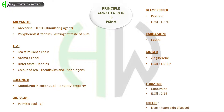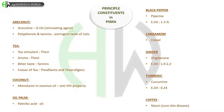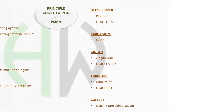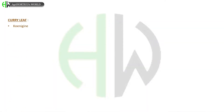In ginger, zingiberene is present and essential oil is about 1.9 to 2.2%. In turmeric, curcumin is the major compound and essential oil is about 0.4%. In coffee, niacin is present, which is used to cure skin disease. In curry leaf, coenigine is present. Asafoetida consists of ferulamine, which has essential oil about 10–17%.